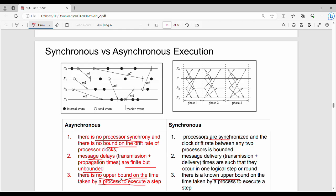There is an upper bound on the time to process a step. So these three points we have to remember - they're just the reverse. Next, you can see the diagram here. Black dots are internal events, white dots are send events.